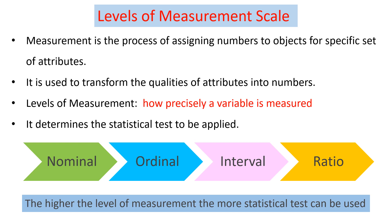Levels of measurement refers to how precisely a variable is measured, or the levels of precision at which a variable can be measured. Knowing the levels of measurement determines the statistical test that is going to be applied. There are four types: nominal, ordinal, interval, and ratio. The higher the level of measurement, the more statistical tests can be applied. For example, more tests can be applied for ratio than nominal, because nominal is the lower level while ratio is the higher level.